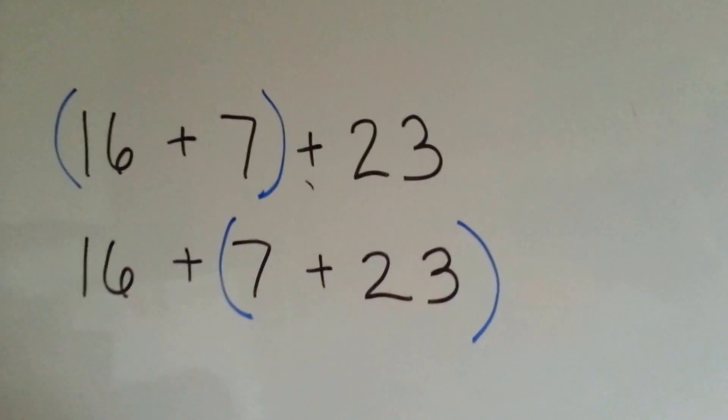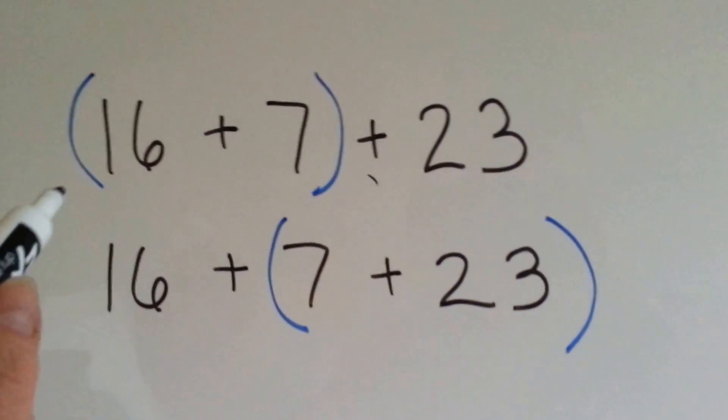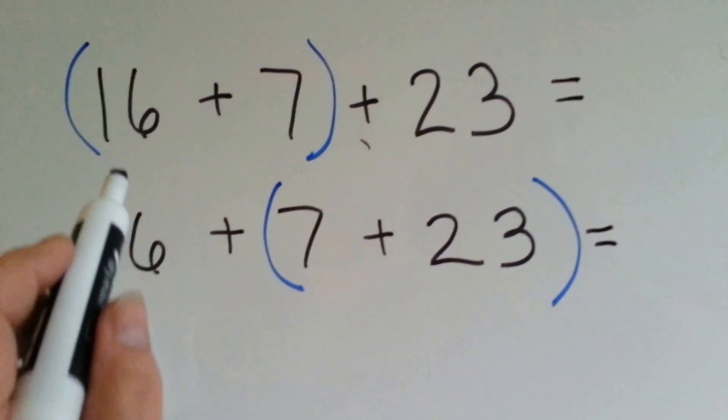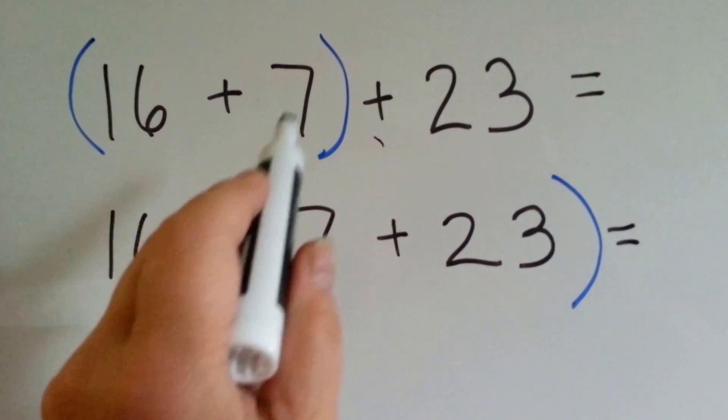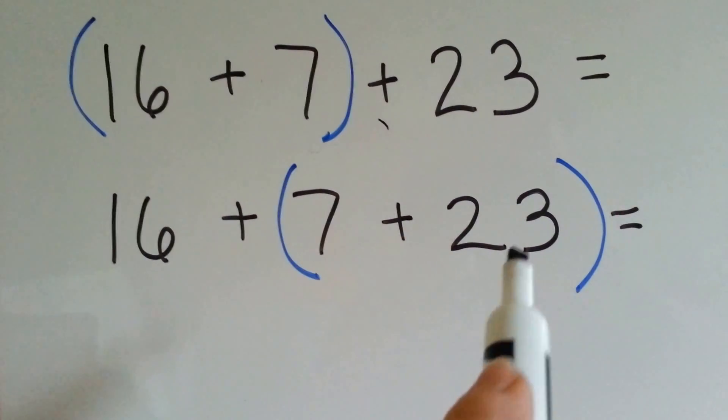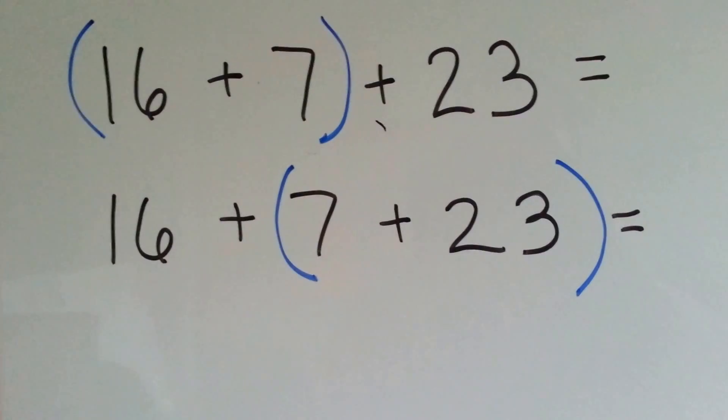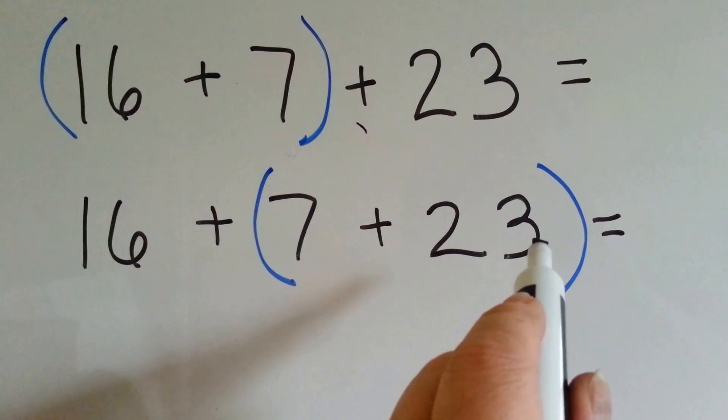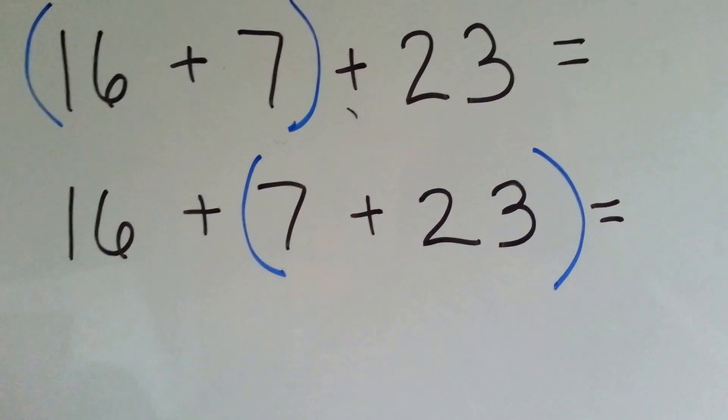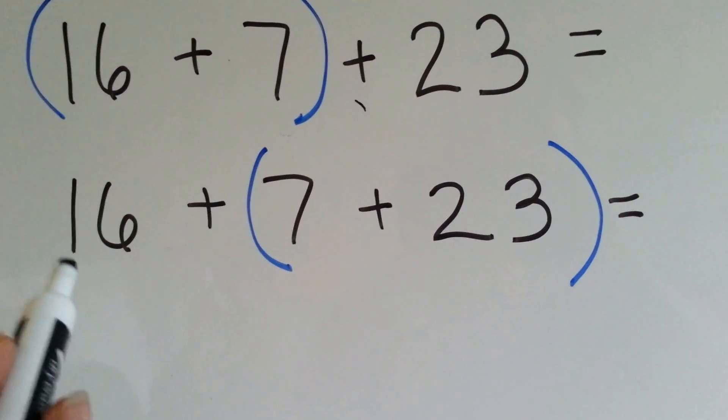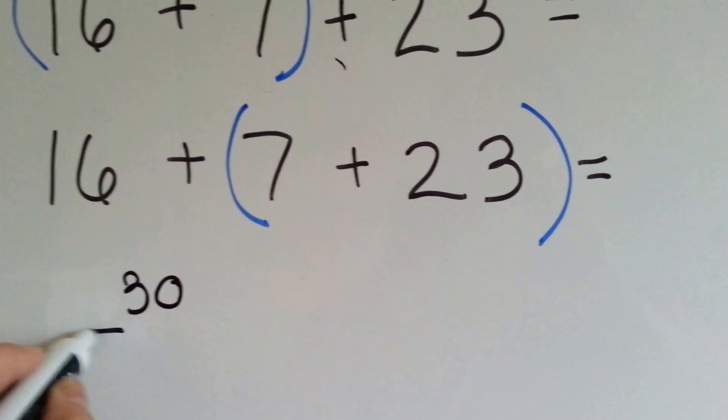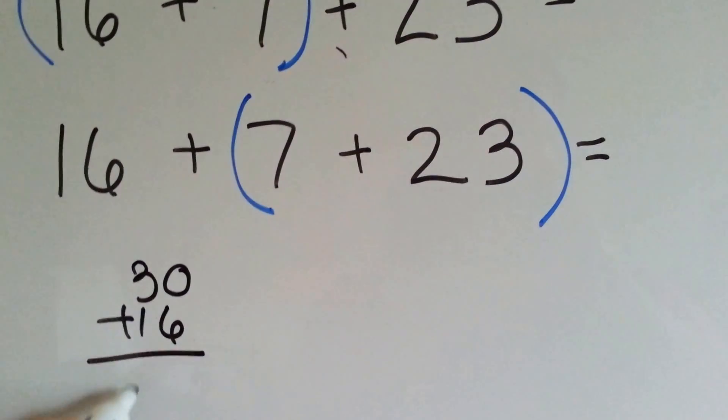Which way would be easier to add? You know it's going to be the same amount. They're going to equal the same thing. Is it easier to add the 16 and the 7 and then add the 23? Or is it easier to add the 7 and the 23 and then the 16? Well, 7 and 3 makes 10 and 2 more 10s would be 30. Then you just add the 16. What's 30 and 16? It's 46.